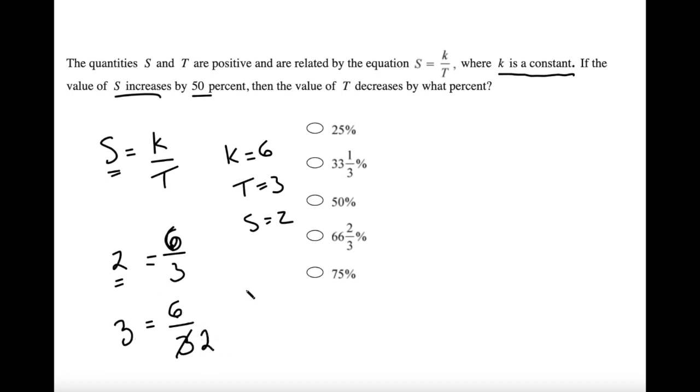So my new values for k, s, and t are k is 6, that doesn't change. t now is 2, and s is 3. So what did we do to s? We increased s by 50%, from 2 to 3.